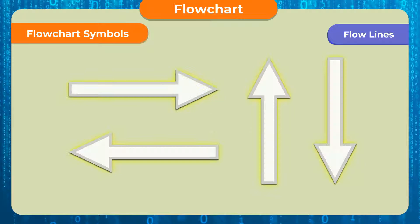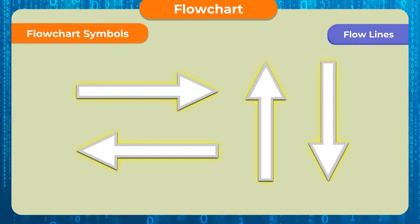Flow lines. Flow lines in a flowchart are the arrows which connect the two boxes and determine the flow or sequence of the instructions used in a program. These flow lines generally flow from top to bottom and from left to right.